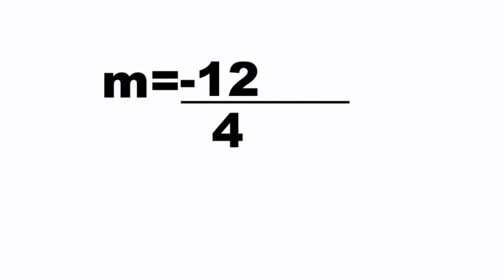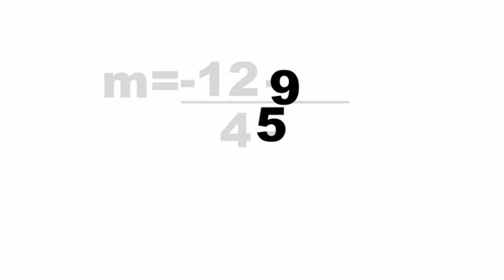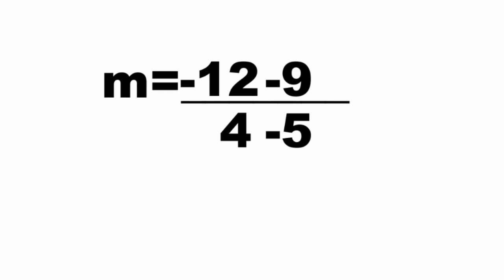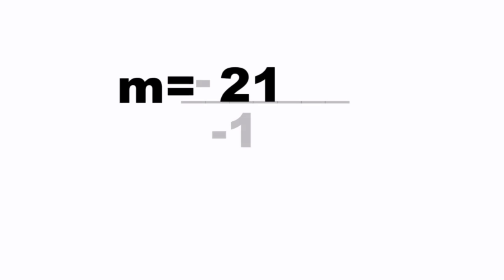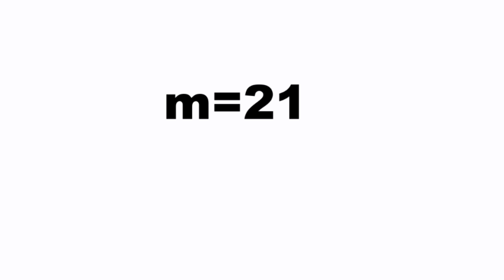For point (4, -12), write -12 on top and below write 4. Then for point (5, 9), write minus 9 on top and below write minus 5. -12 minus 9 is -21, and 4 minus 5 is -1, so the slope of the line is 21.